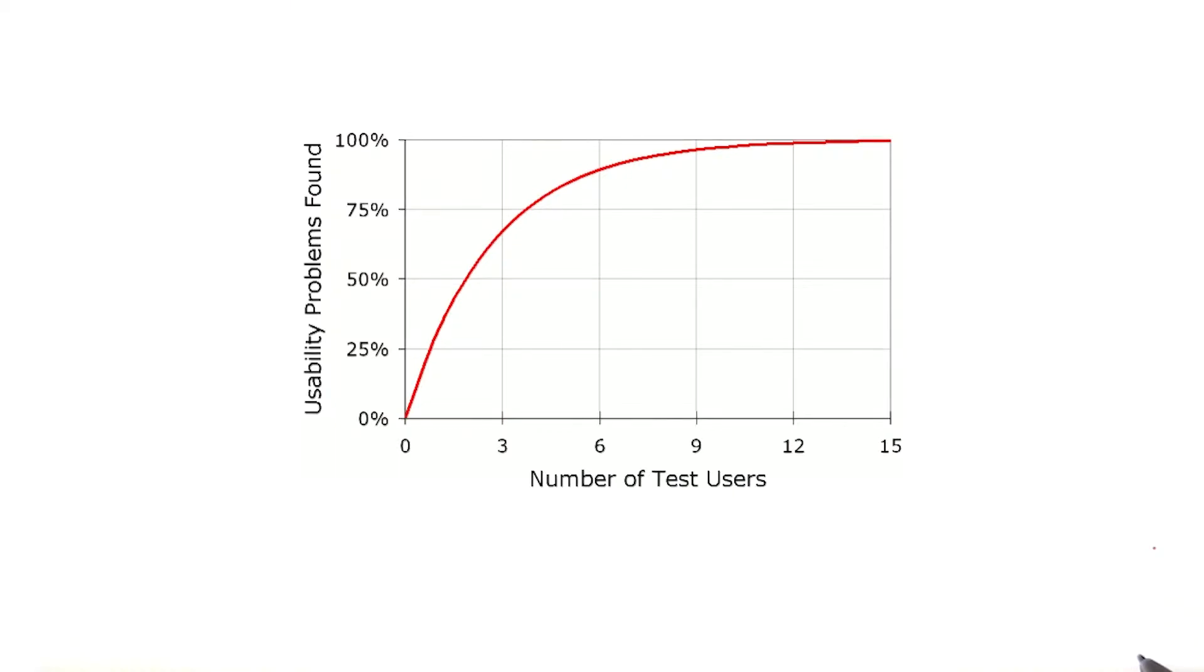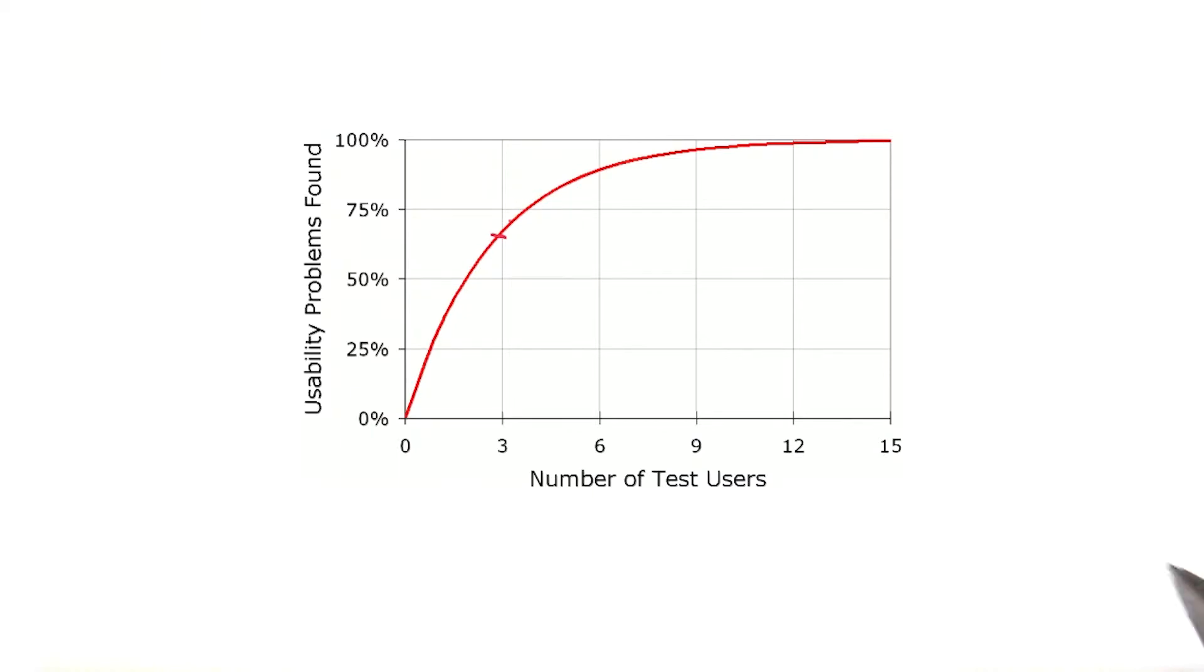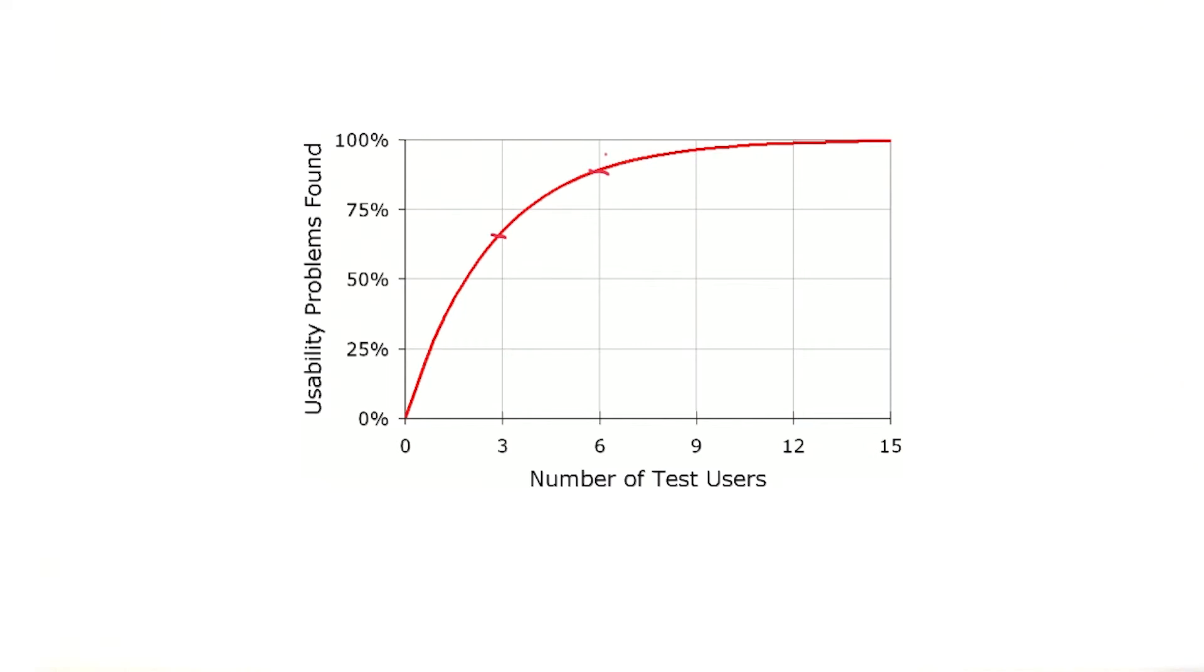One of the most fascinating articles in user research by Jacob Nielsen shows that on average, a study of three users will find upwards of 60% of the issues with their prototype. A study of five users will average upwards of 75% of the issues.